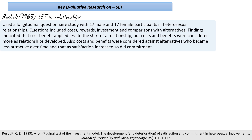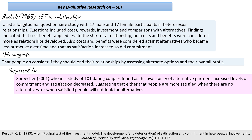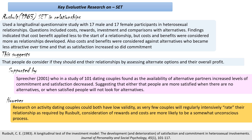As satisfaction increased and the balance of rewards and losses shifted more towards profit, commitment also increased. This suggests people do consider whether to end a relationship by assessing alternate options and overall profit, which is what social exchange theory predicts. A more recent study by Sprecher looked at 101 dating couples and found that the more alternatives available, the lower the satisfaction. This suggests either people are more satisfied when there are no alternatives to compare against, or that satisfied people tend not to look for alternatives. A criticism of this research, however, is low validity — very few couples will explicitly rate their relationship in this way, and cost-benefit analysis is more likely an unconscious process.